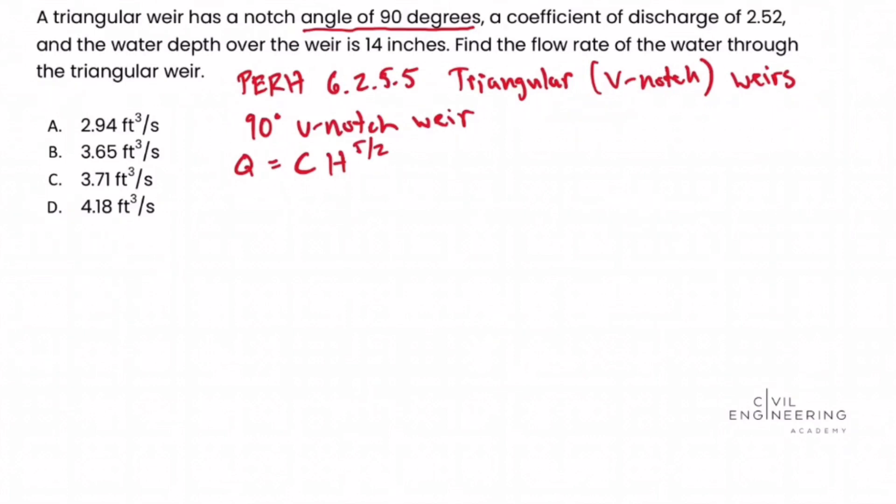So Q, we're asked to find the flow rate. So Q is the discharge or the flow rate. That's what we're solving for. Q is equal to C. Well, C we just said was the discharge coefficient. In the problem statement we're given the coefficient of discharge is 2.52. So 2.52 times H.